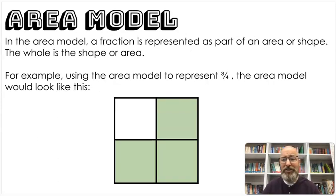So let's get started first with the area model. Let's look at what it is. In the area model, a fraction is represented as part of an area or part of a shape. The whole is the shape or the area. Here's an example. For example, using the area model to represent three-fourths, the area model would look like this. So we have a fraction area model here showing three-fourths. And by the way, I'm going to use three-fourths for all the models so you can see it represented in different ways.